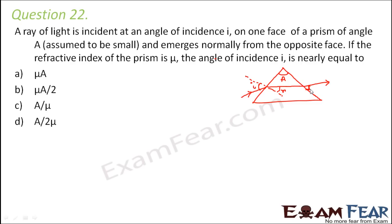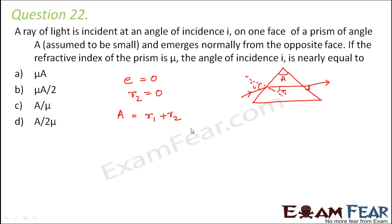What are the values given here? The ray emerges normally, so the angle of emergence is equal to zero because the emergent ray coincides with the normal. So angle of emergence is 0. Therefore R2 is also equal to 0. We know that A equals R1 plus R2, so in this case A is equal to R1.